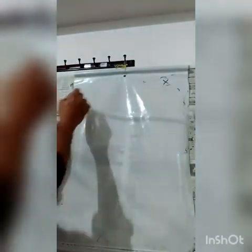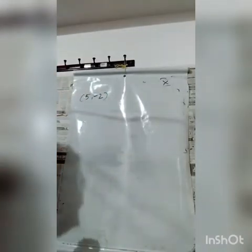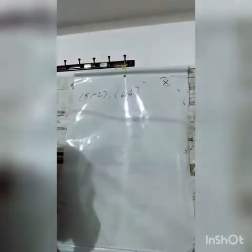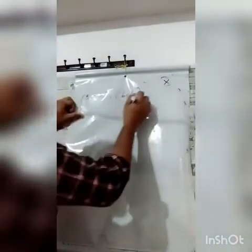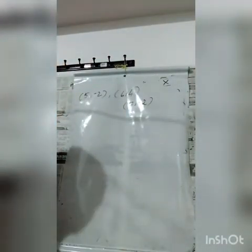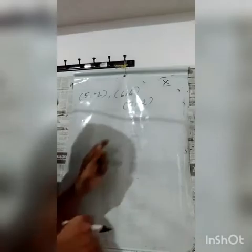Check whether the points (5, -2), (6, 4), and (7, -2) are the vertices of an isosceles triangle. So, the given points as the vertices of an isosceles triangle is what we need to check.